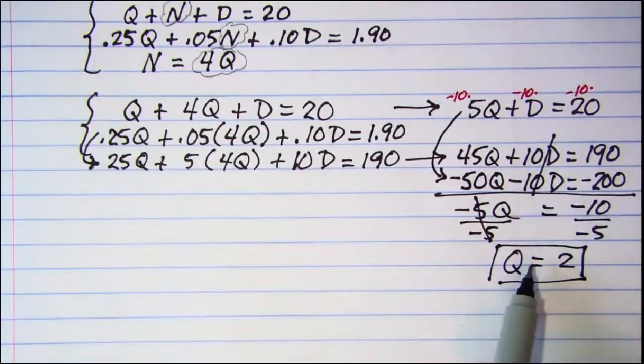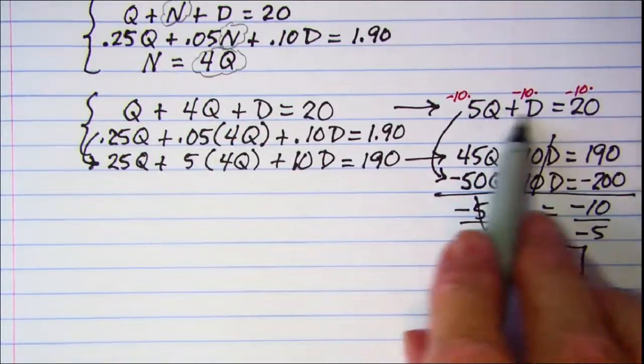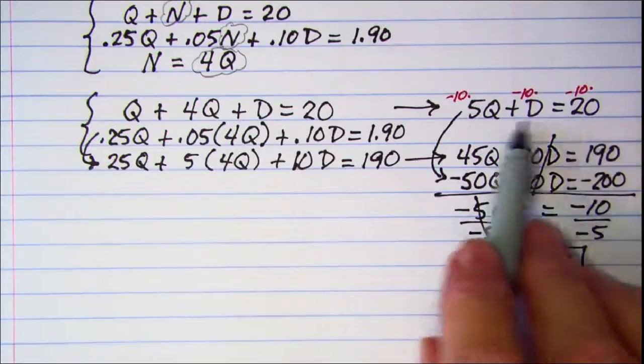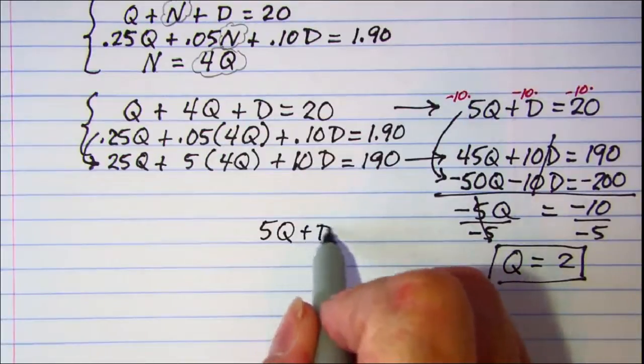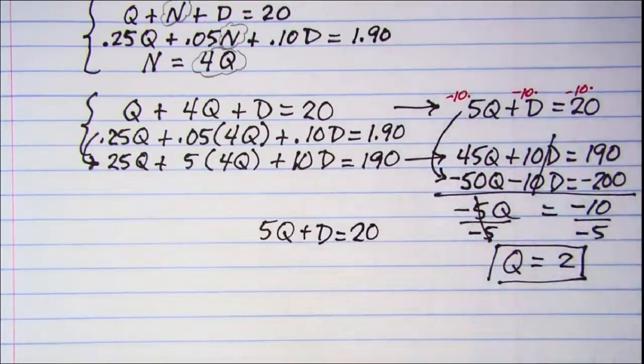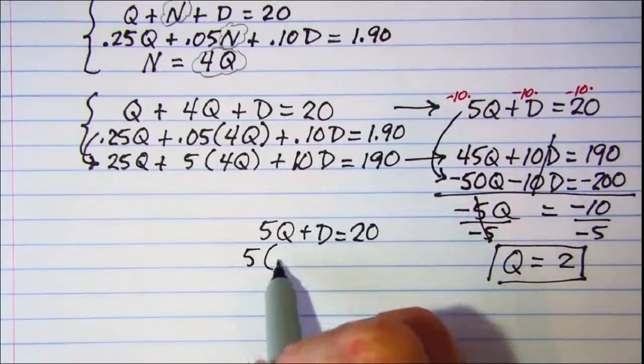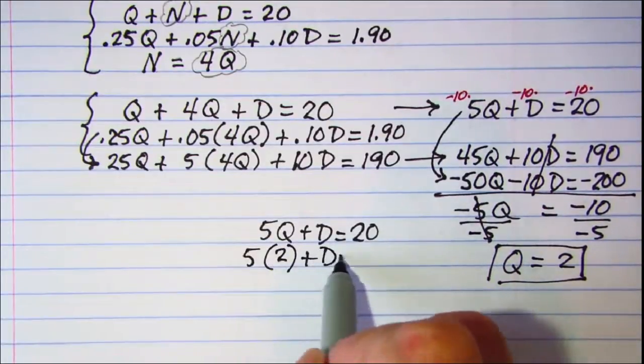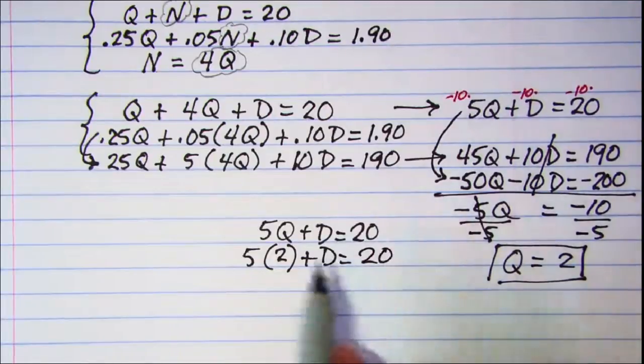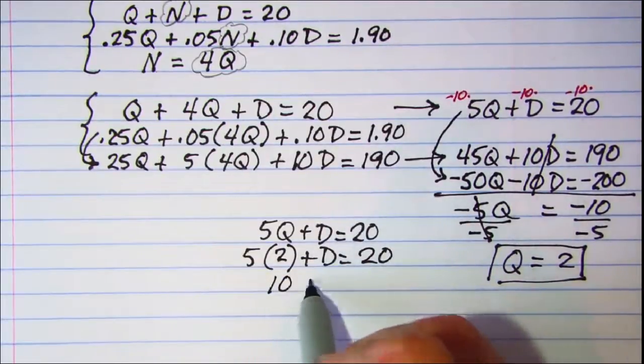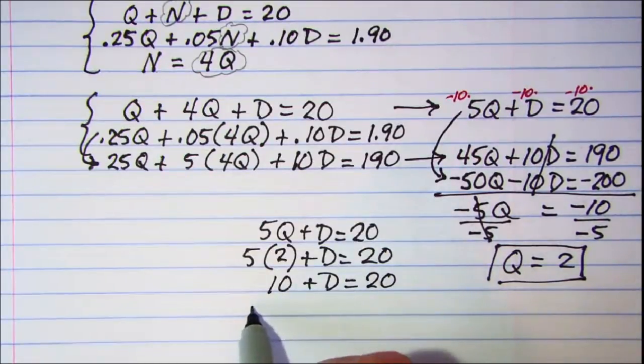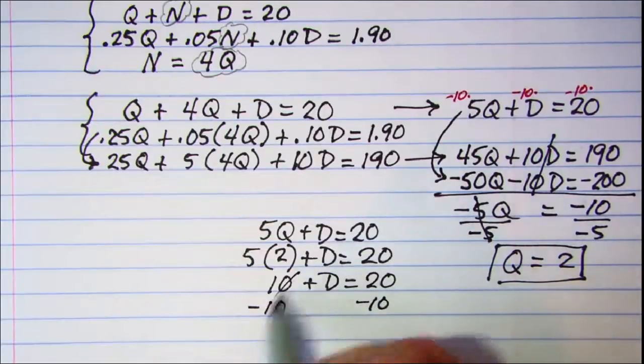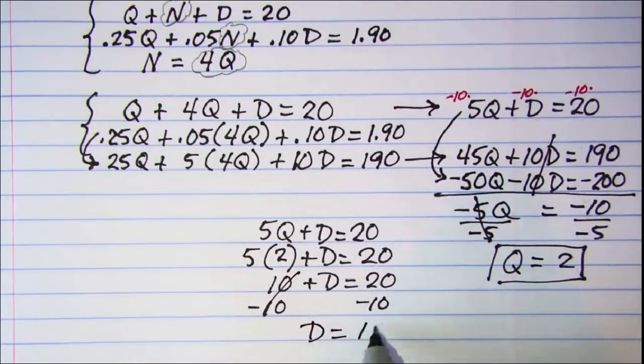Now let's go ahead and work backwards here, let's put our Q value of 2 into this equation, 5Q plus D equals 20, so 5 times 2 plus D equals 20, 5 times 2 is 10, plus D equals 20, subtract 10 from both sides, these will cancel, and D is equal to 10.